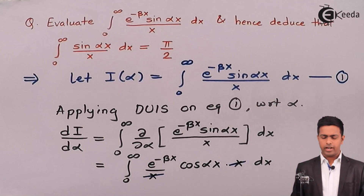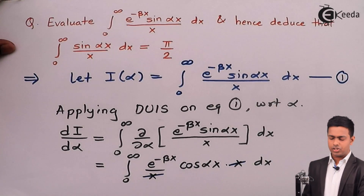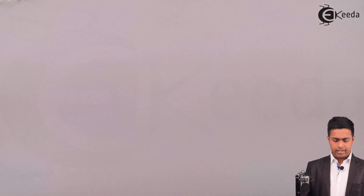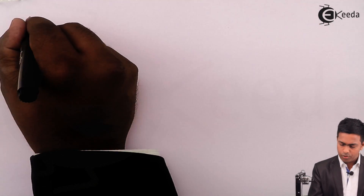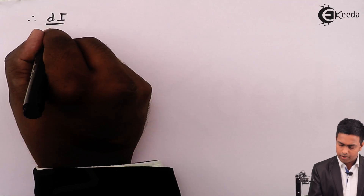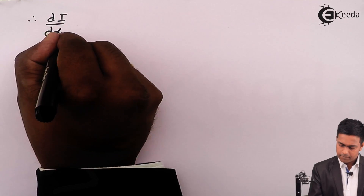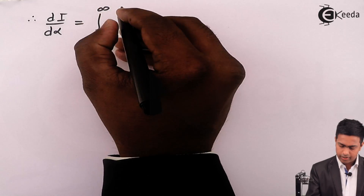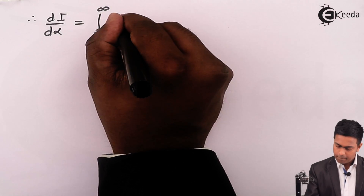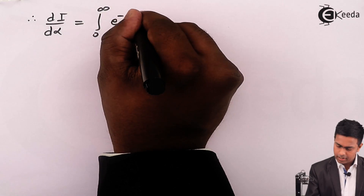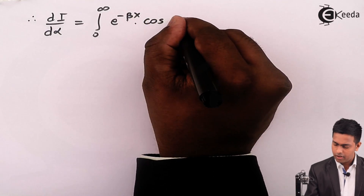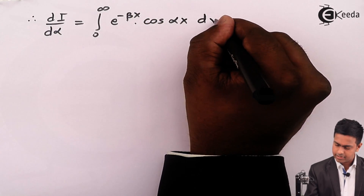We get e raised to minus beta x times cos(alpha x). Therefore, dI by d alpha is equal to the integration from 0 to infinity of e raised to minus beta x times cos(alpha x) dx.